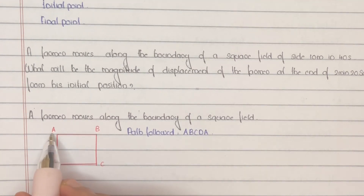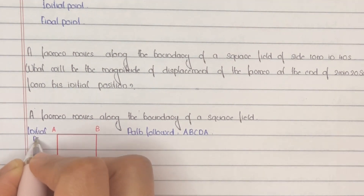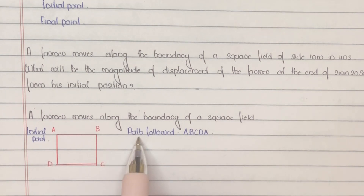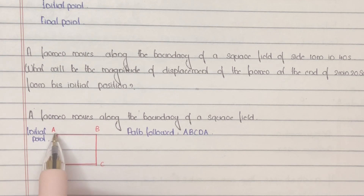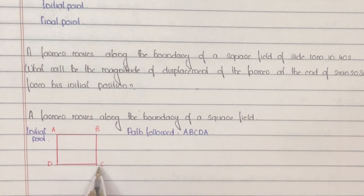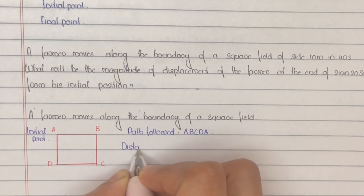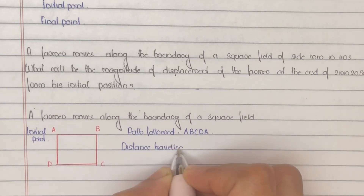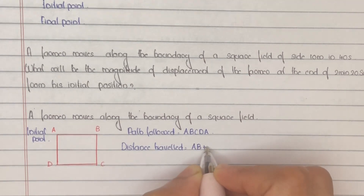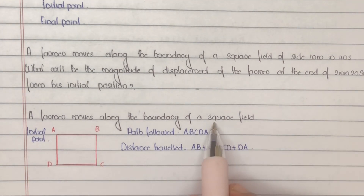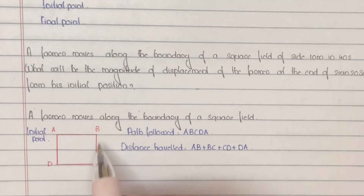We consider A as the starting point or initial point. So if we complete one round, the path followed is A, B, C, D, A and the distance travelled will be AB + BC + CD + DA. It is given as a square field and in a square all sides are equal.